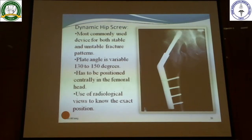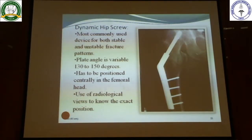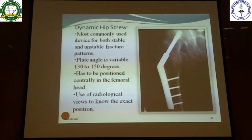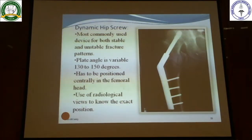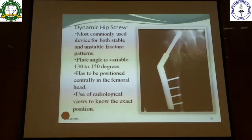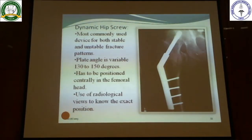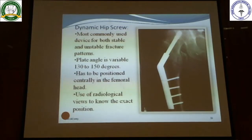The dynamic hip screw (DHS) is generally considered the gold standard for intertrochanteric fracture but can also be used in neck of femur fracture. It consists of a plate with a Richards screw going into the neck and head, with the plate fixed to the bone with screws. It is modeled according to the normal neck-shaft angle.